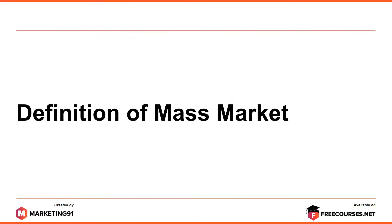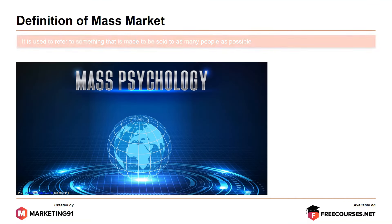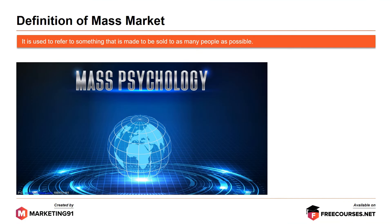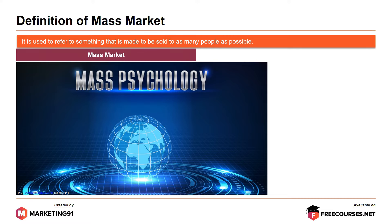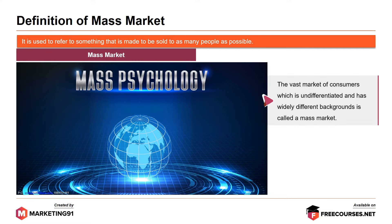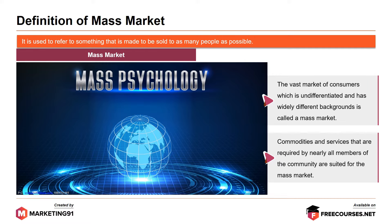Let's start with the definition of mass market. It is used to refer to something that is made to be sold to as many people as possible. The vast market of consumers which is undifferentiated and has widely different backgrounds is called a mass market. Commodities and services that are required by nearly all members of the community are suited for the mass market.